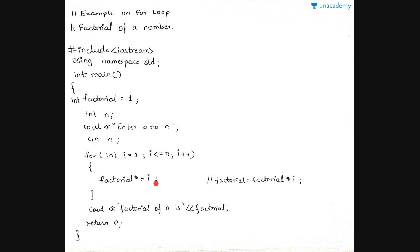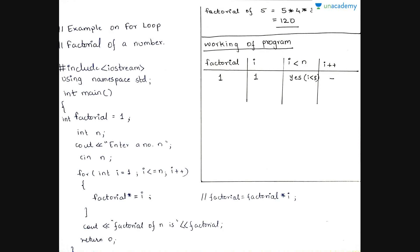If the test expression is true then the loop body is evaluated, else not. The update expression is i++. The block of code inside is: factorial *= i, which is shorthand for factorial = factorial * i. These two are the same. Factorial of 5, for example, is 5 * 4 * 3 * 2 * 1, which equals 120.